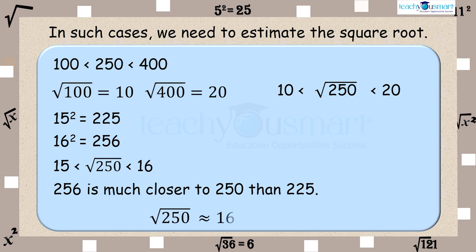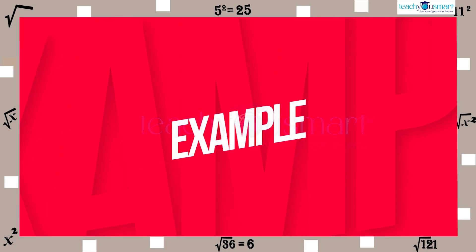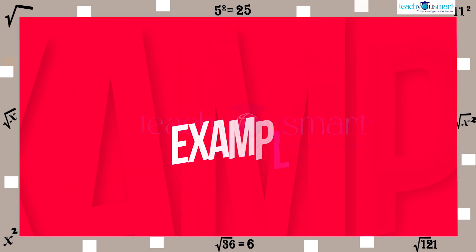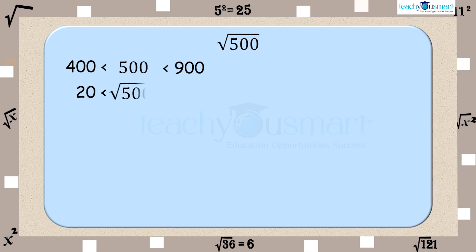So the square root of 250 is approximately 16. Let's do another example: find the square root of 500. We know 400 < 500 < 900, that is 20 < √500 < 30.